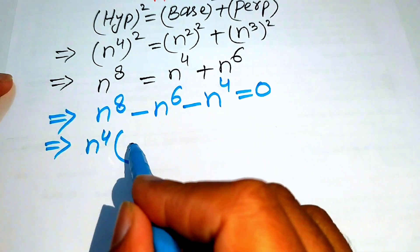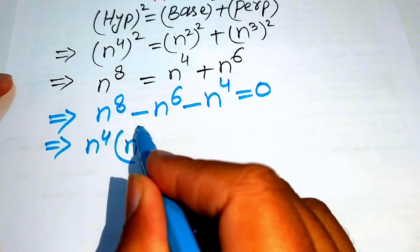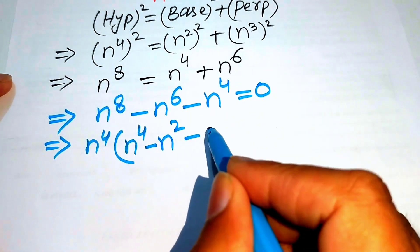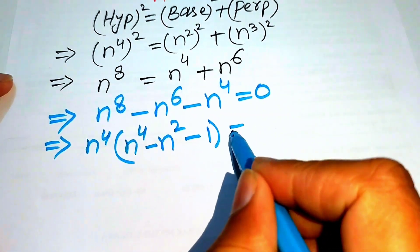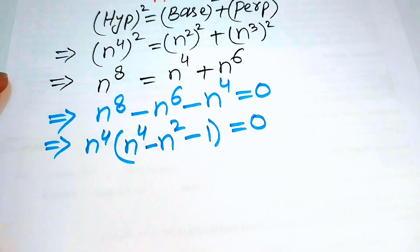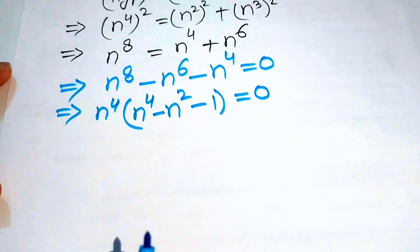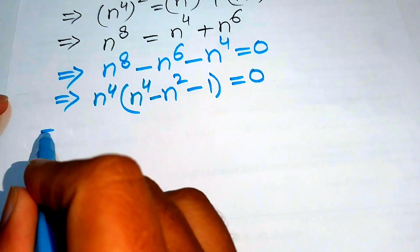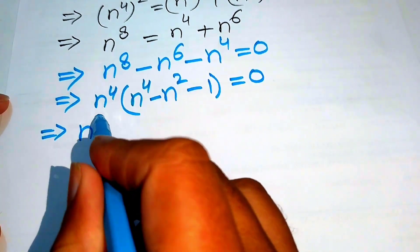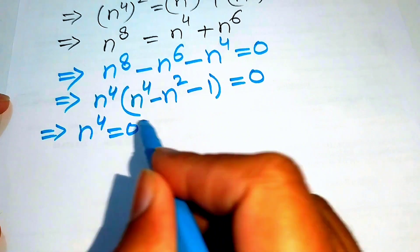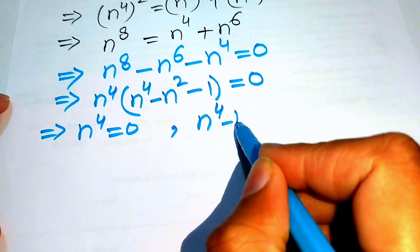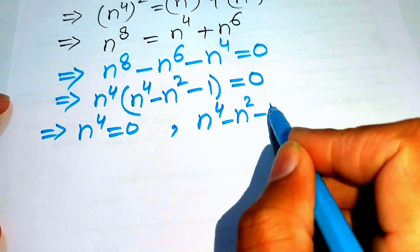We factor out n to the power of 4 from the three terms. The remaining factor is n to the power of 4 minus n squared minus 1, and the whole equation equals 0. We split this into two cases: Case 1 is n to the power of 4 equals 0, and Case 2 is n to the power of 4 minus n squared minus 1 equals 0.